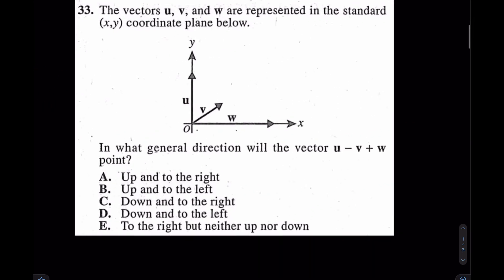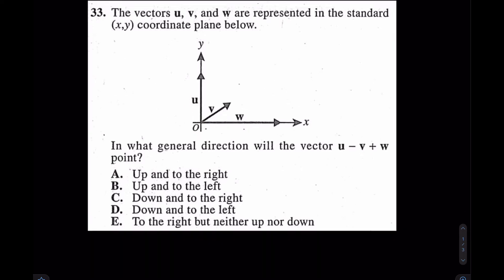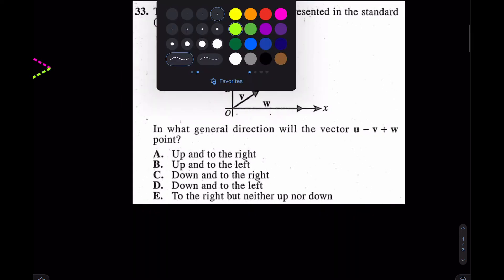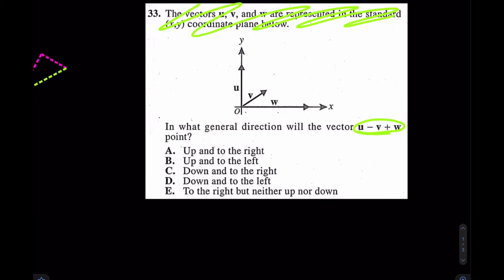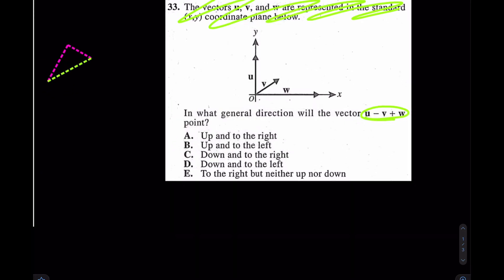Let's try 33 over here. Very, very similar idea. Again, I'm not really going to waste my time reading all this. I just go straight to the math. It says if I went u minus v, then w. Really, u minus v plus w. What is that the same as? Well, let's try.